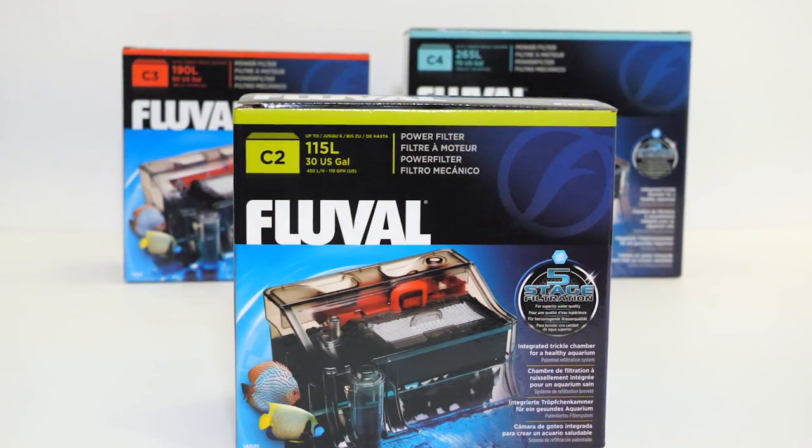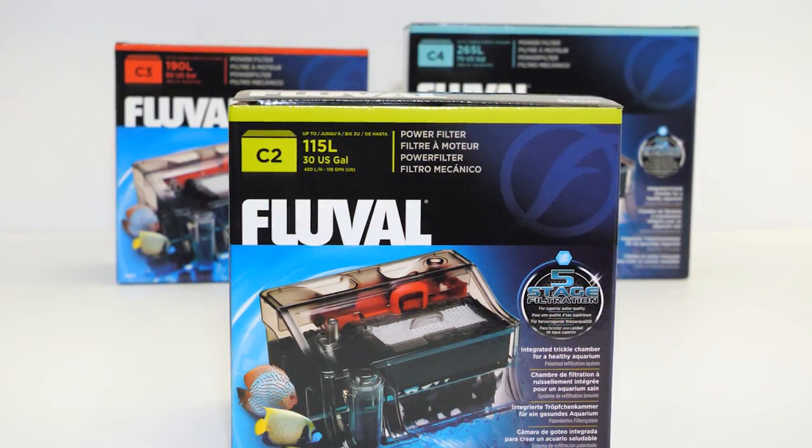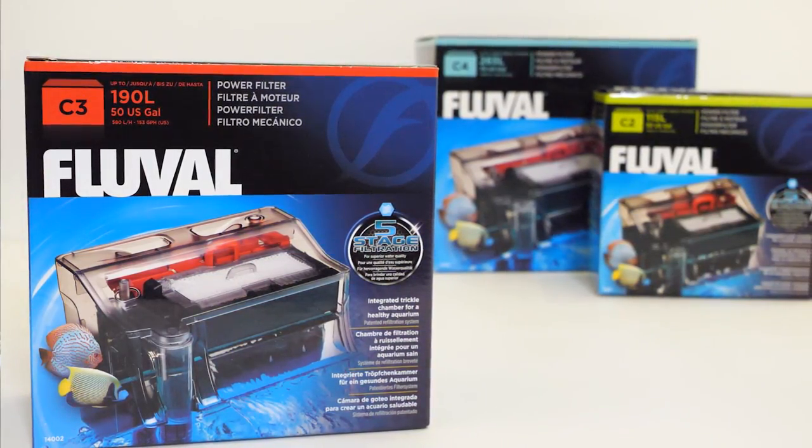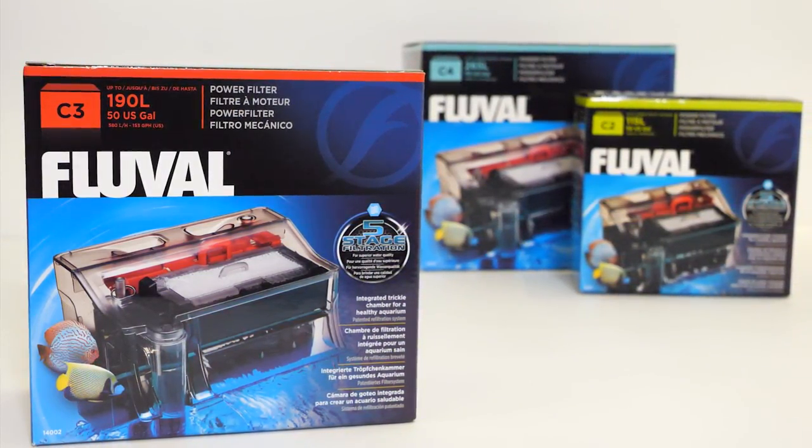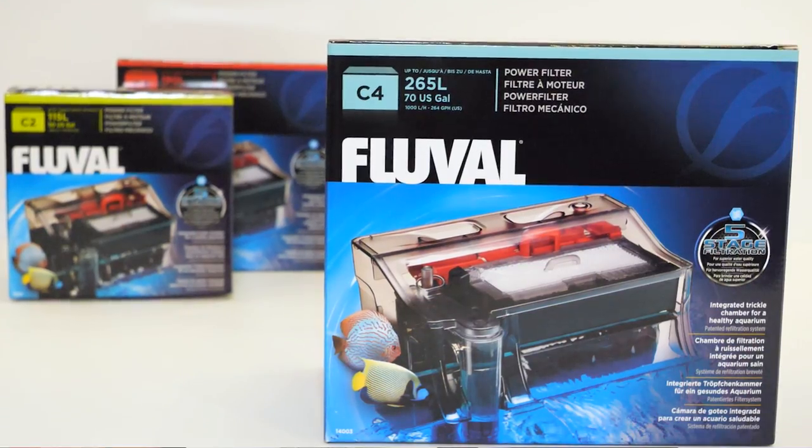C-Series filters are made in Italy and are available in three sizes: the C-2 for aquariums up to 30 gallons or 115 liters, the C-3 for aquariums up to 50 gallons or 190 liters, and the C-4 for aquariums up to 70 gallons or 265 liters.